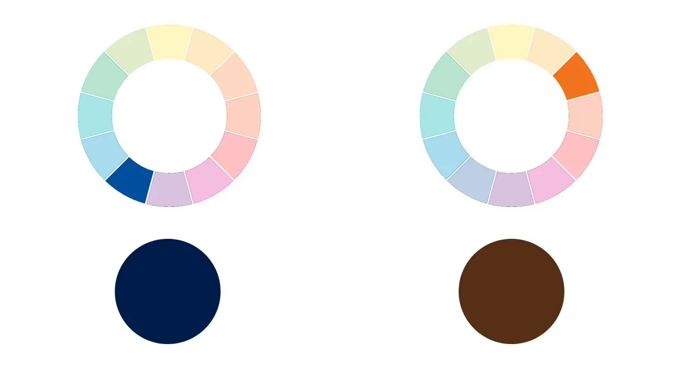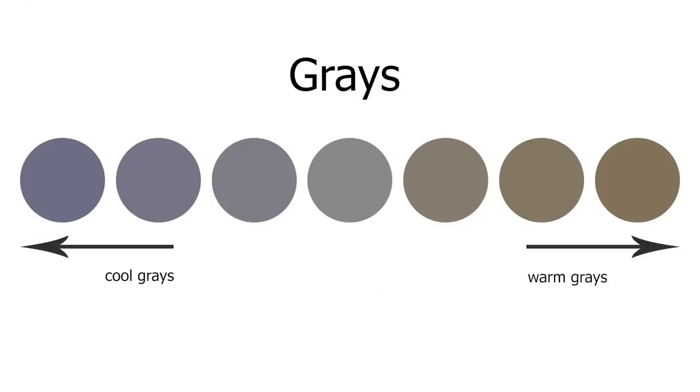Blue is clearly a cool color, while brown leans towards orange, a warm color. Brown can almost be considered as a dark value or a shade of orange. Now, if we mix a cooler black with a white, the result is a cooler gray. If we take a warmer black and mix it with white, the result is a warmer gray. You can create a whole multitude of grays by using various pigments of blue and brown and mixing that mixture with white. Here's a look at several different grays based on their color temperature.